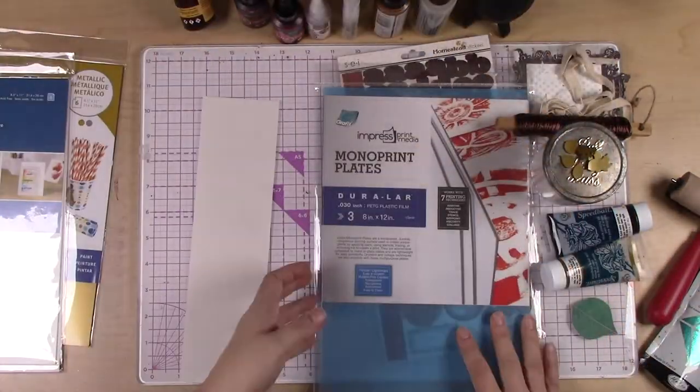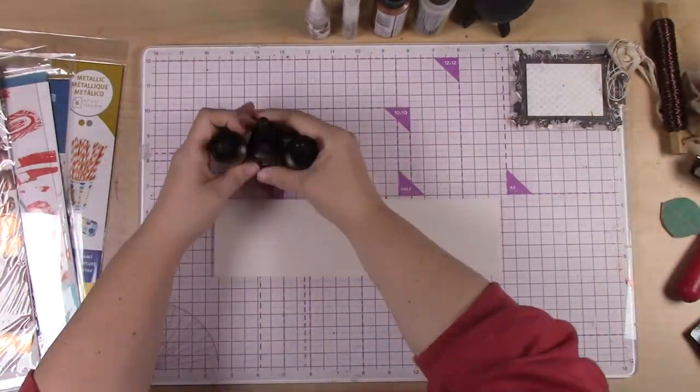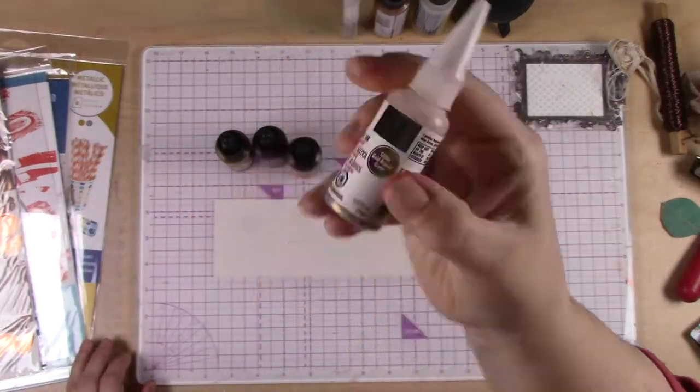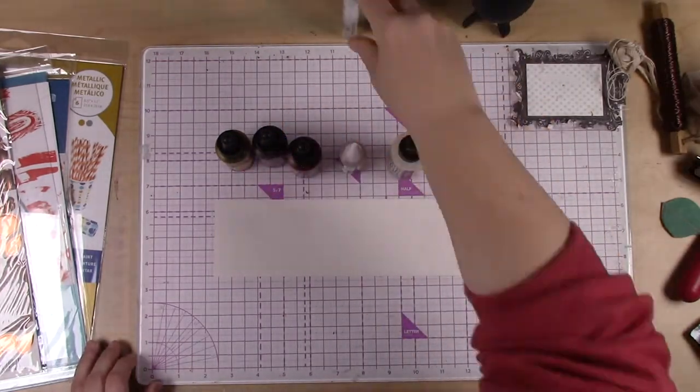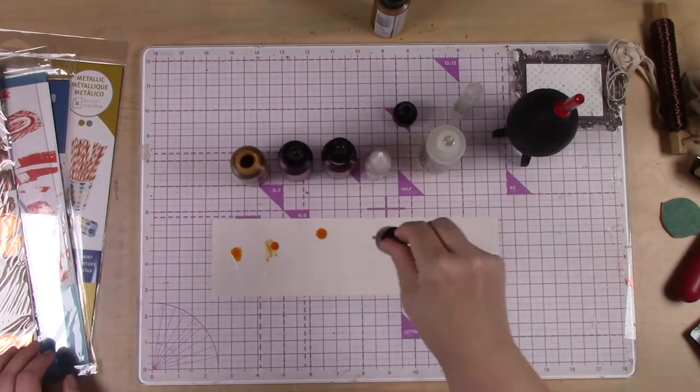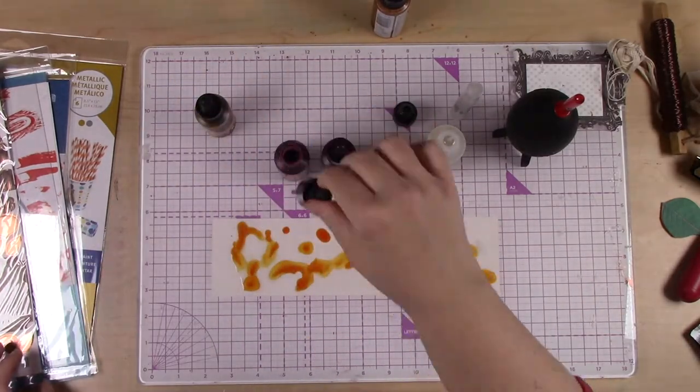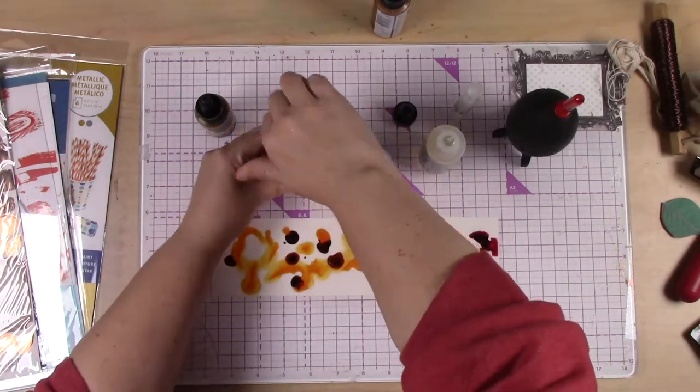Next we are going to use adhesive backed film from Graphix as well. It is clear and we are going to put some alcohol ink on top of it from different brands. We've got some blending solution that we're starting with here and then we're just going to use the dropper and add a few different colors of alcohol ink.